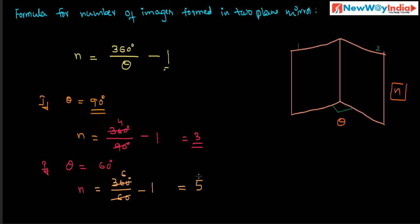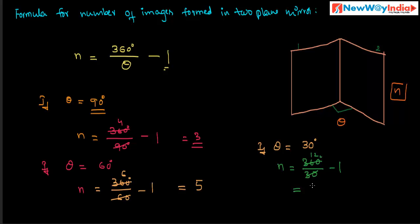In the same way, if the angle between the mirrors theta is equal to 30 degrees, then how many images are formed? n = 360° ÷ 30° − 1 = 12 − 1 = 11. So 11 images are formed when theta is 30 degrees.